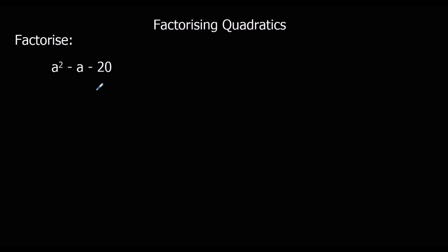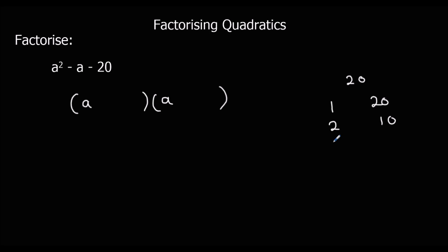Same thing again — this time it's a. So we're going to have an a in each bracket. Then we're going to look at the factors of twenty. Twenty is one times twenty, two times ten, or four times five. Which of these can I make minus one out of? I can't make it from one and twenty, or two and ten. It's going to have to be four and five. How can I make minus one? It's a plus four take away five. And if you expanded this, you should get back to the original.